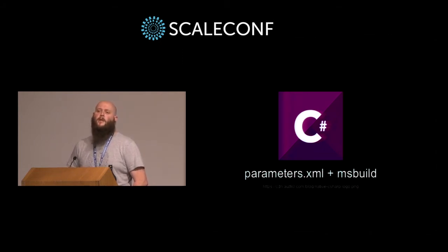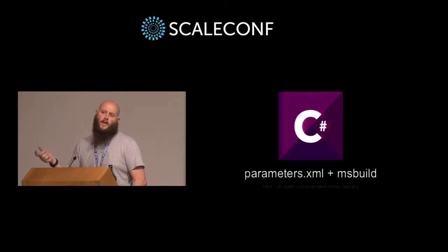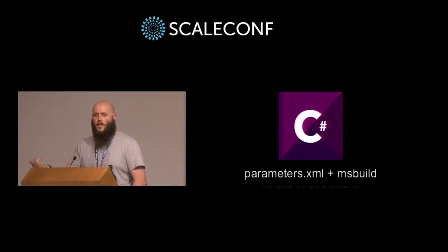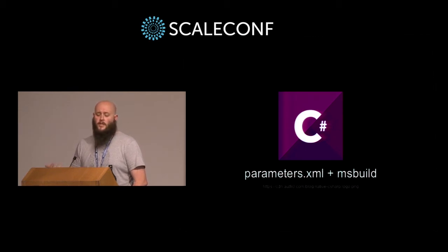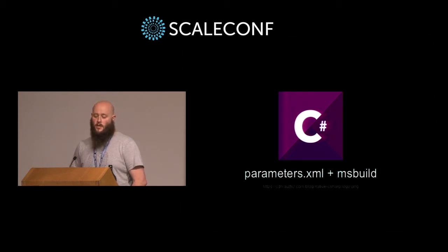For C# developers out there, there's a very nice mechanism called parameters.xml — an XML transformation that, when you build your project, uses MS Deploy to inject values into your web config at deploy time instead of build time. You compile your app with placeholders and blanks, then at actual deployment the parameters.xml file injects sensitive data. This takes your sensitive data much closer to your deployment system — please go Google 'parameters.xml MS Deploy' because it will make your life a lot easier.